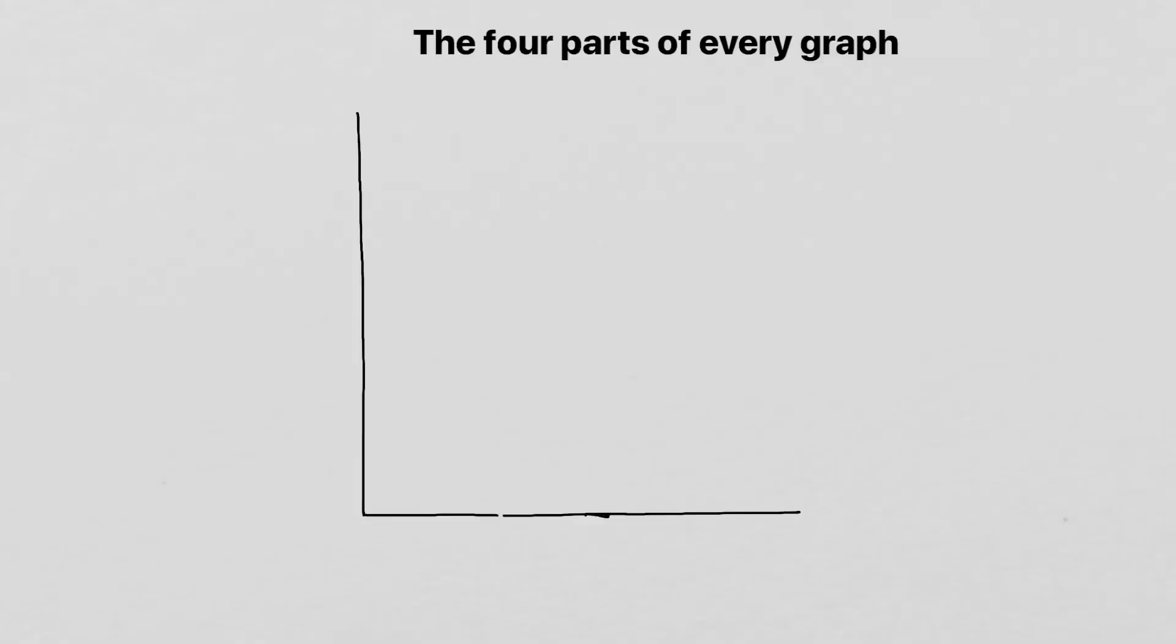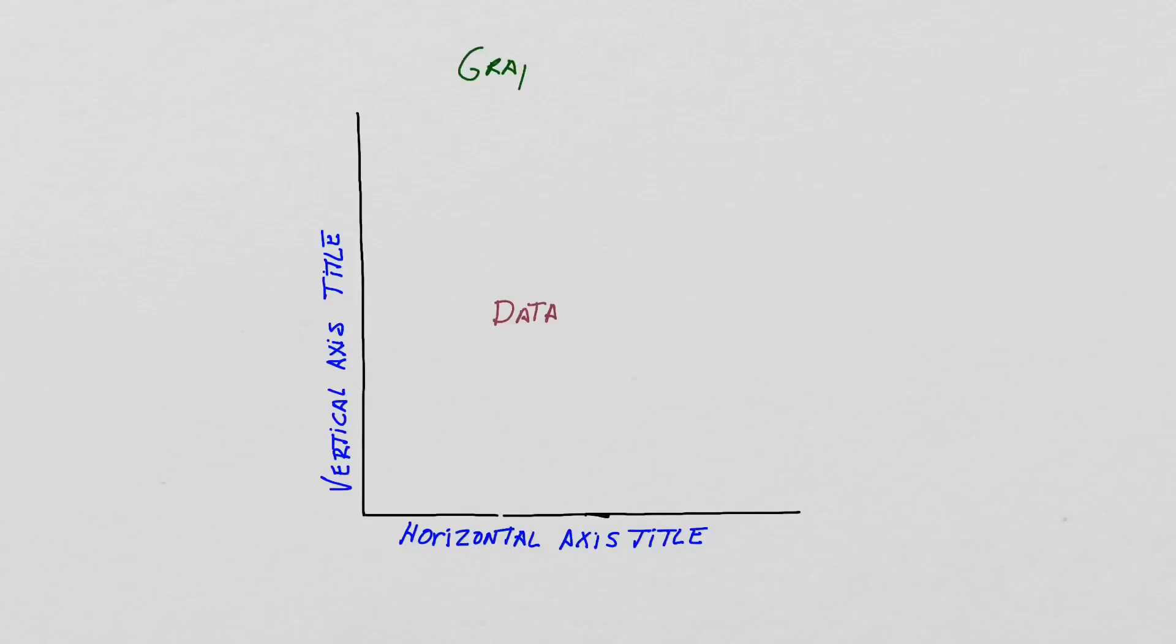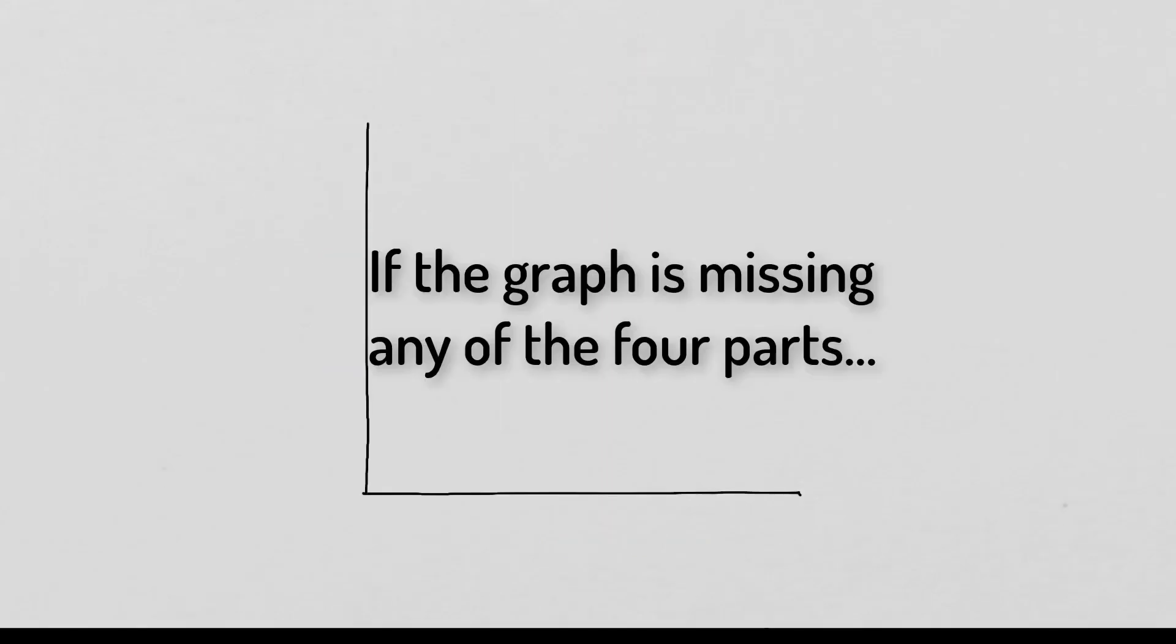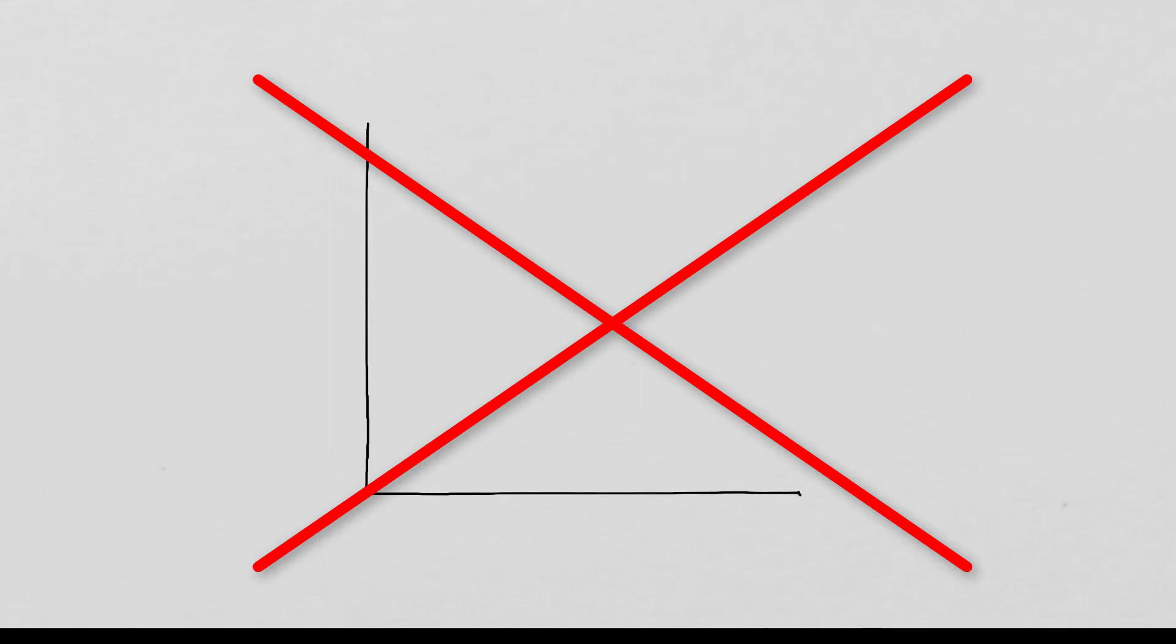The four parts of every graph. Part 1, the horizontal axis title. Part 2, the vertical axis title. Part 3, data. Part 4, the graph title. If the graph is missing any of the four parts, there is a serious problem.